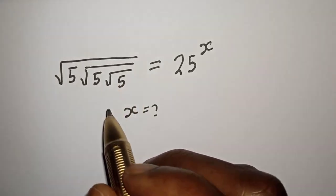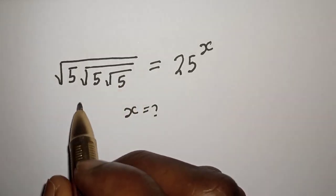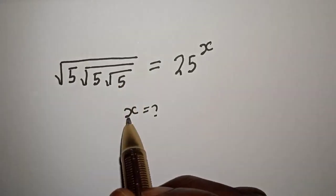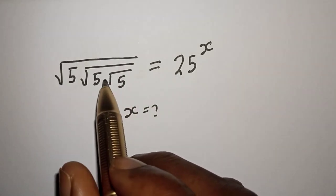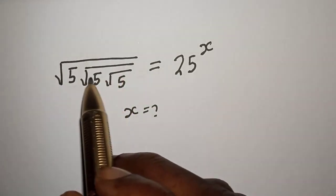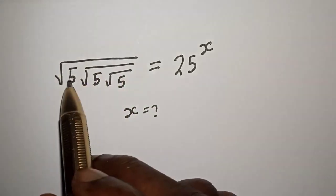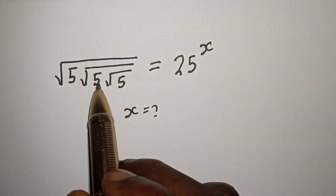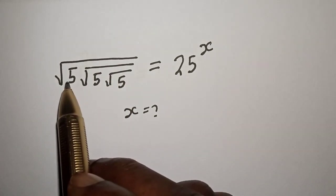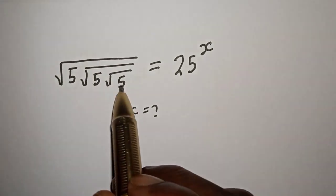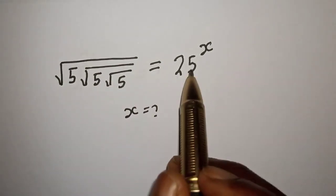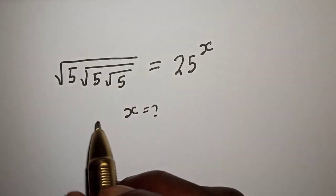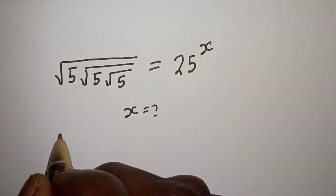Hello, welcome to MathsFocus. How to solve for x from this given equation: square root of 5, square root of 5, square root of 5 is equal to 25 raised to power x — solution.